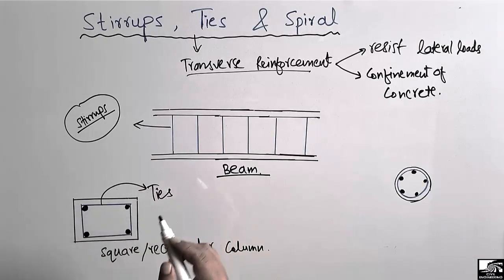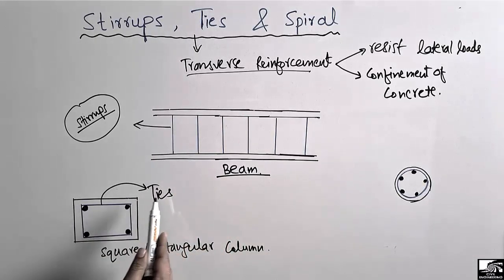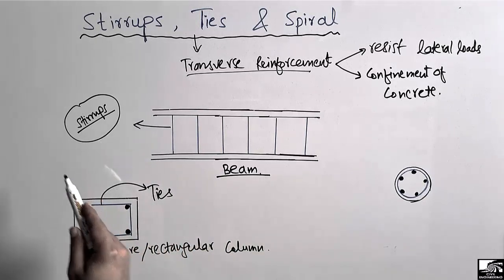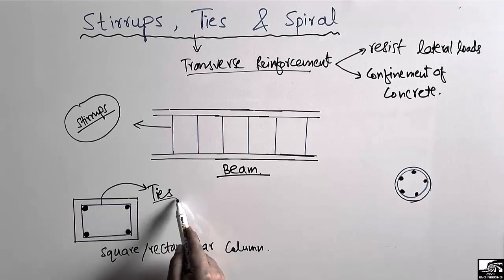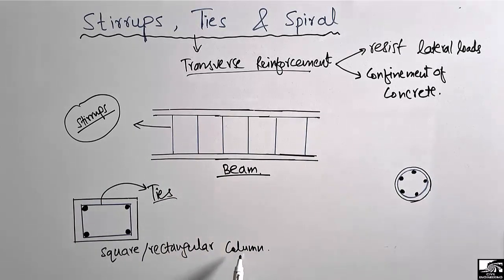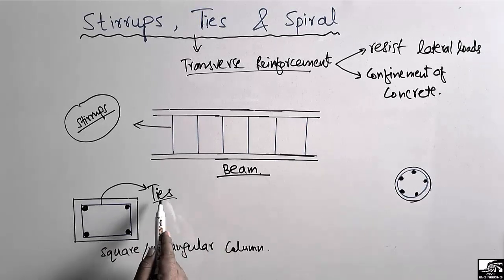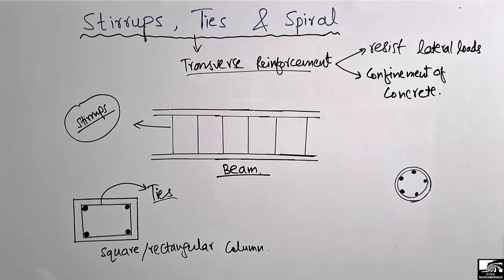The purpose of this reinforcement is the same as stirrups, but in a square or rectangular cross section of a column, such reinforcement is called ties. This is simply a different technical name for column transverse reinforcement.